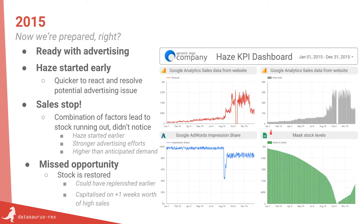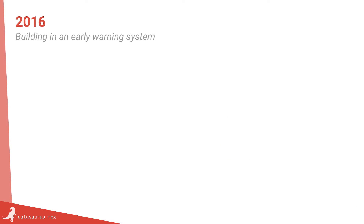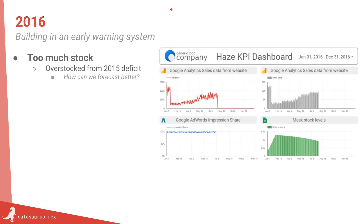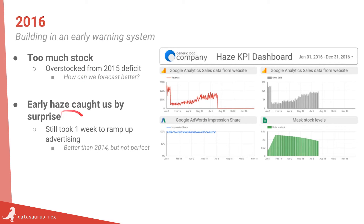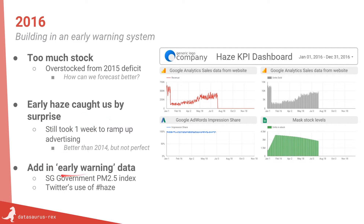You can see how we keep adding to this view and it becomes more and more relevant. Moving into 2016 — we've got too much stock, we ordered too much trying to backfill from the 2015 situation. We need an early warning system because the haze caught us by surprise last year. So we're going to add in these early warning systems looking at the government haze metric, which defines how hazy it is, and also look at Twitter and social media to figure out when people are tweeting about haze.